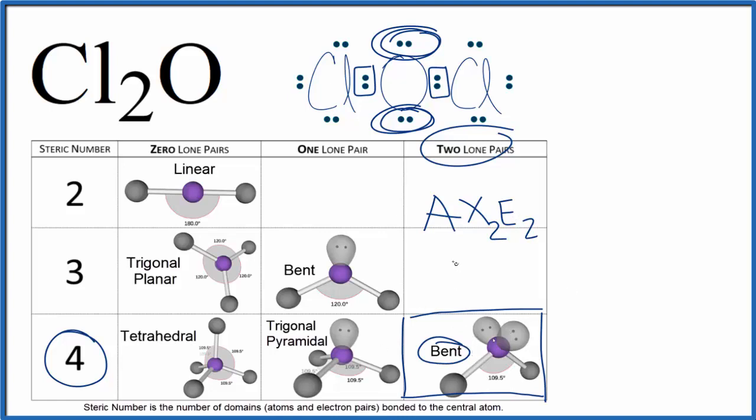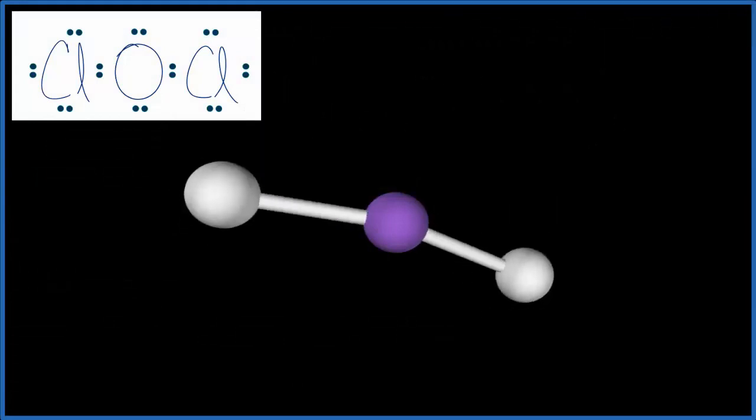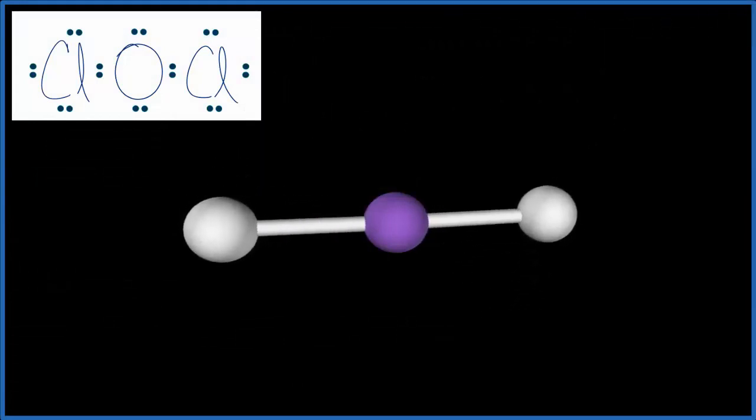Either way, it works. Let's look at this in three dimensions to really understand what's going on here. So the purple, that's the central oxygen atom, and we have those two chlorine atoms bonded with single bonds. So they spread out to be as far away as they can from each other.